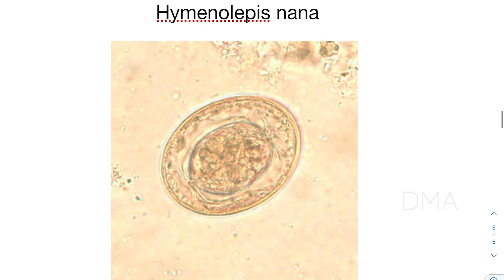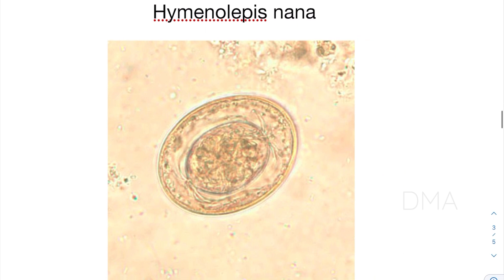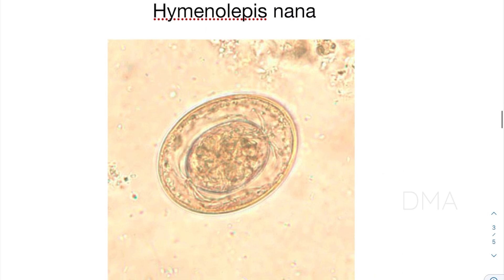When it comes to the Hymenolepis nana egg, you can clearly notice that there are polar filaments on either end. That would be the identifying feature of the Hymenolepis nana egg.